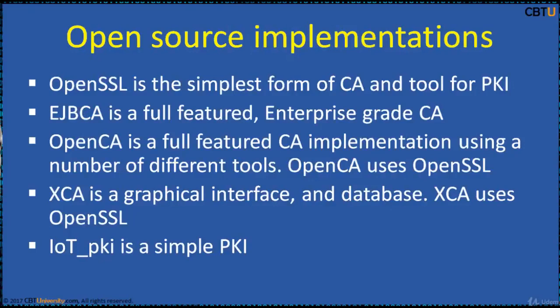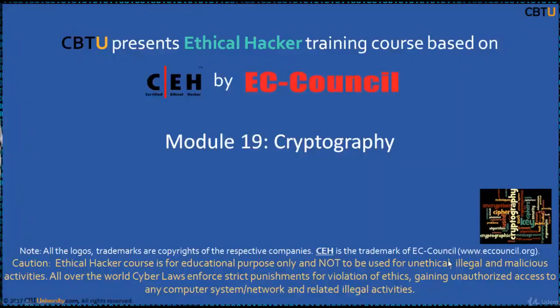OpenSSL is the simplest form of CA and tool for PKI, included in all major Linux distributions, and can be used both to build your own CA and PKI-enabled applications. EJBCA is a full-featured enterprise-grade solution that can be used to set up a CA both for internal use and as a service. OpenCA is a full-featured CA implementation using a number of different tools, and uses OpenSSL for the underlying PKI operations. XCA provides a graphical interface and database, also using OpenSSL for the underlying PKI operations. IOTPKI is a simple PKI built using the Python Cryptography library.